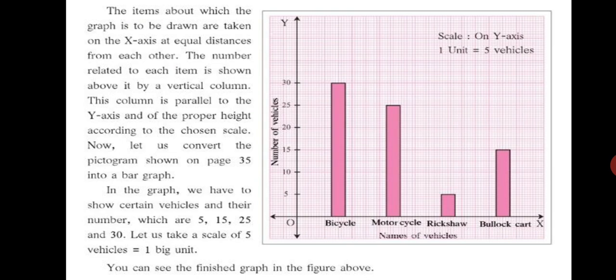So, now let us convert the pictogram shown on page 35 into a bar graph. In the graph, we have to show certain vehicles and the number which are 15, 5, 15, 25 and 30. So, as I mentioned earlier, let us take a scale of 5 vehicles is equal to 1 unit. You can see the finished graph now in the picture. Looking at the graph, if I ask you, how many bicycles? So, you will say 30 bicycles. How many motorcycles? 25. How many rickshaws? 5. And how many bullock carts? 15.